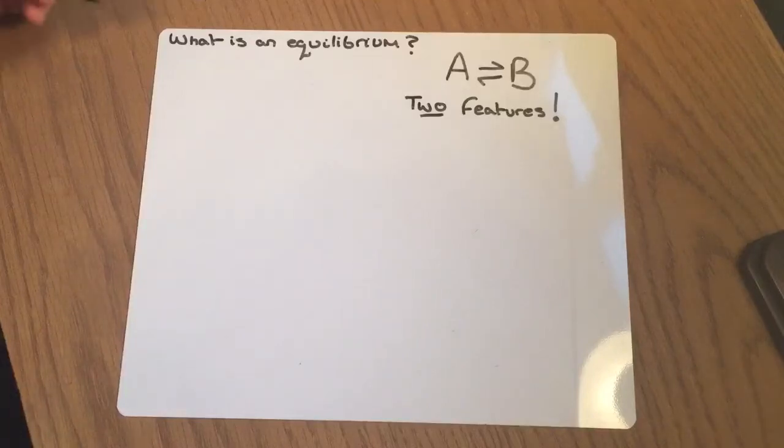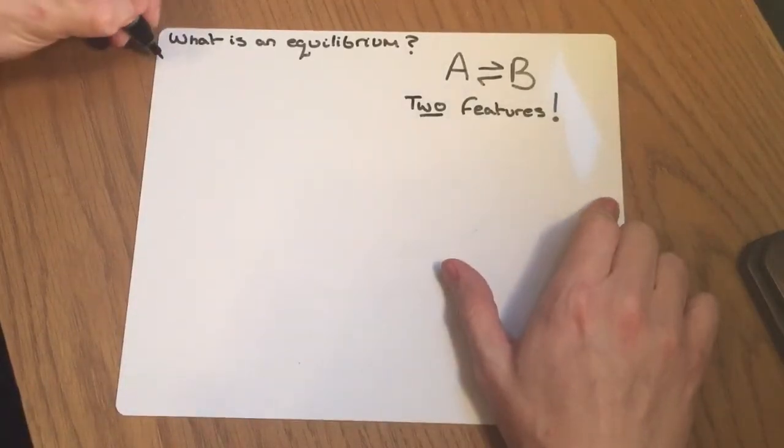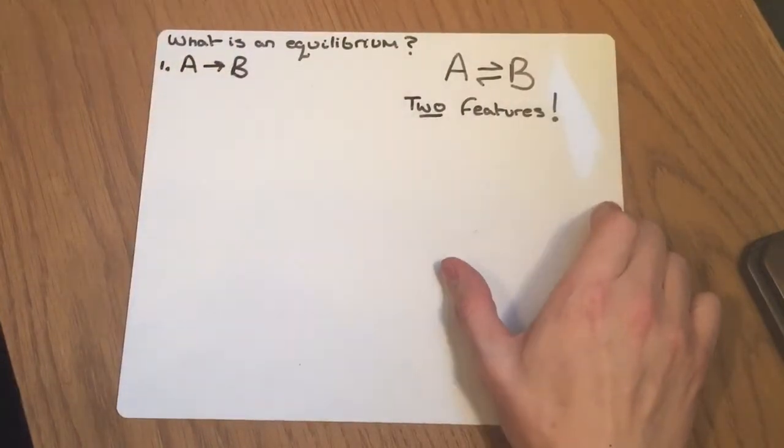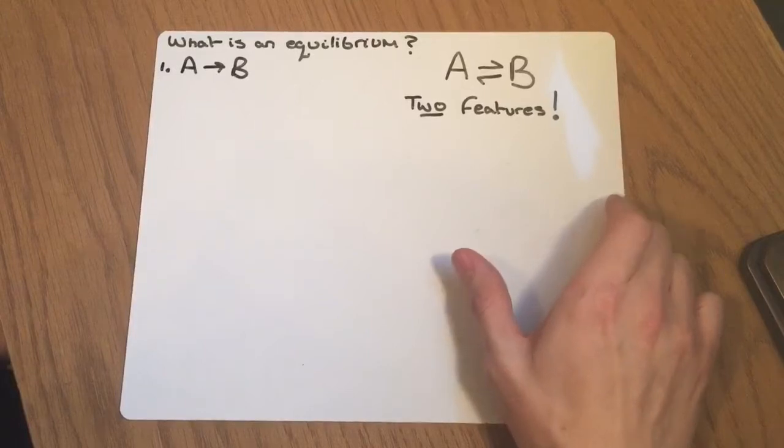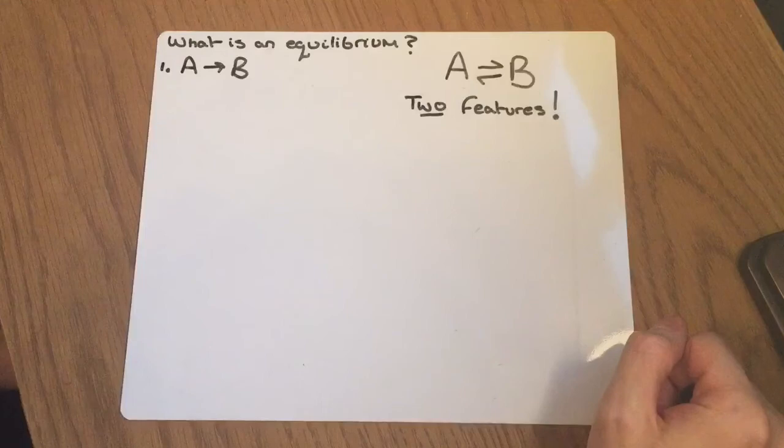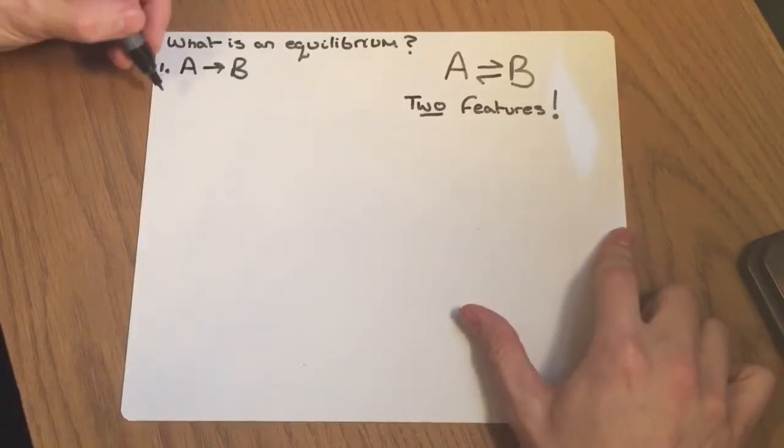So first off, how do we actually establish the equilibrium? Well, if we consider a normal reaction first, of A going to B, some reactions just go in that forward direction and then never get reversed. However, others, if placed under closed conditions, so either a sealed container or everything dissolved in a solvent, then what can happen is,